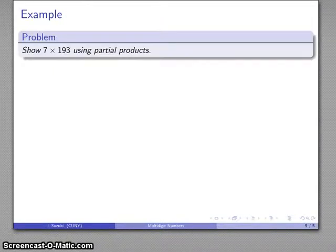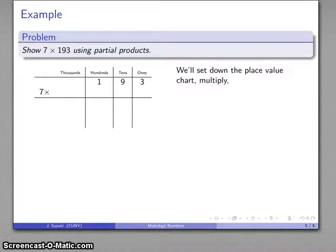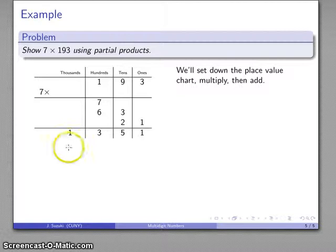For example, let's take seven times 193 using partial products. I'll set down my place value chart. I'll multiply. I have seven ones, seven nines, seven threes, and I'll set those down, 7, 63, 21. So there's my partial products, and I'll add those together, 1,351 as my product.